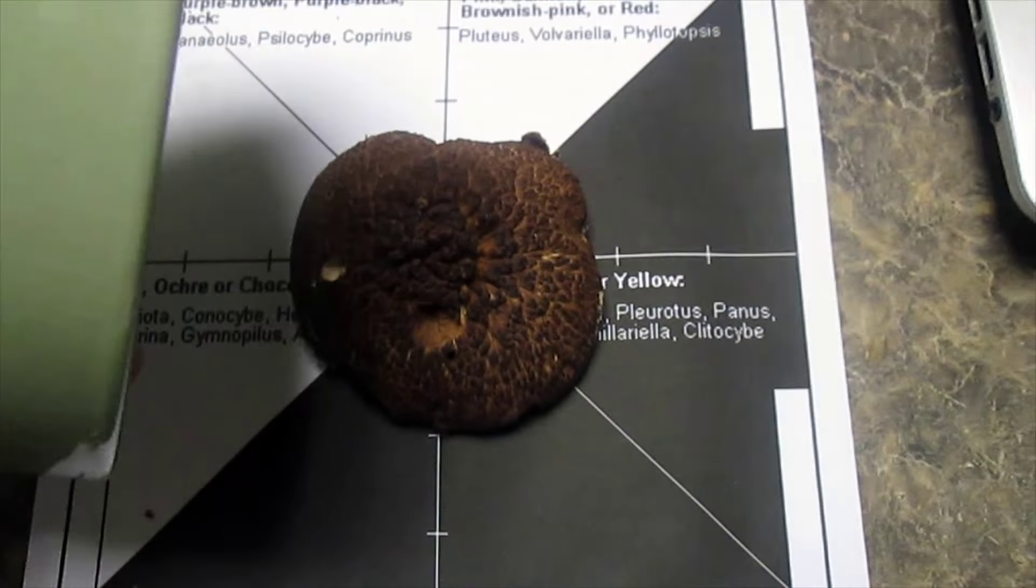So here we are. I'm going to take that. There it is. So I've got it covering both black and white. Now I'm going to cover it with something to increase the humidity. Okay, so we're going to cover it with this glass bowl.